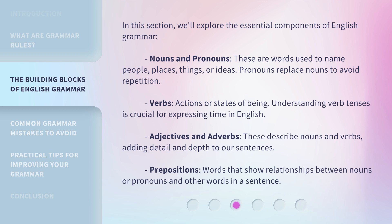Verbs: actions or states of being. Understanding verb tenses is crucial for expressing time in English. Adjectives and adverbs describe nouns and verbs, adding detail and depth to our sentences. Prepositions are words that show relationships between nouns or pronouns and other words in a sentence.